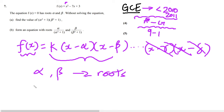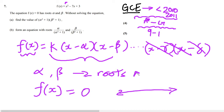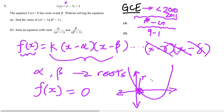The roots of any polynomial are the x-values where f(x) = 0. On the graph, for a quadratic like this, the x-value at one crossing point would be a root, and the x-value at the other crossing point would be the other root.